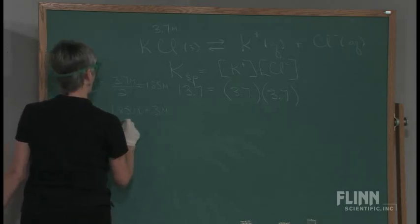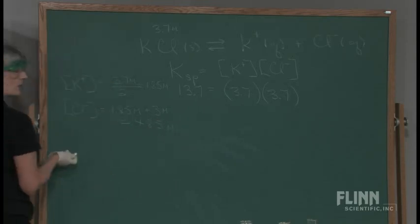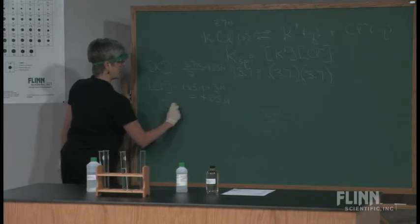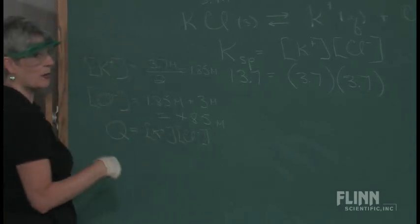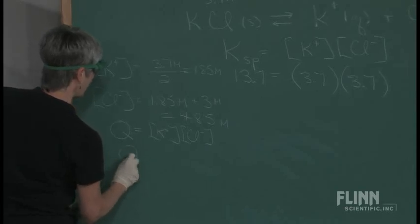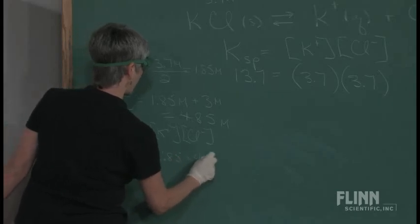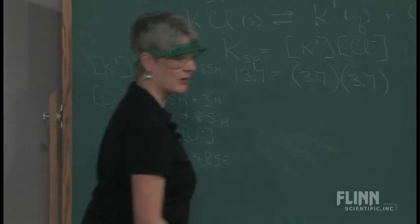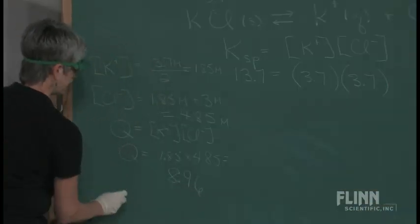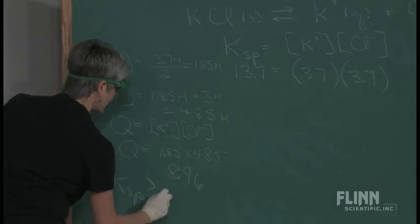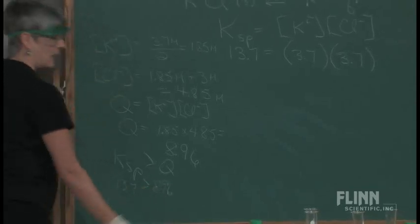We're really not doing a Ksp here—what we're doing is a Q, a reaction quotient. So the Q for this is going to be the potassium ion concentration times the chloride concentration, because remember we're not at equilibrium. The Q for this is 1.85 times 4.85, and that is—let me cheat because I usually do this with my students—8.96. Well, the Ksp is much larger than Q, right? Because 13.7 is bigger than 8.96, and we didn't get a precipitate.